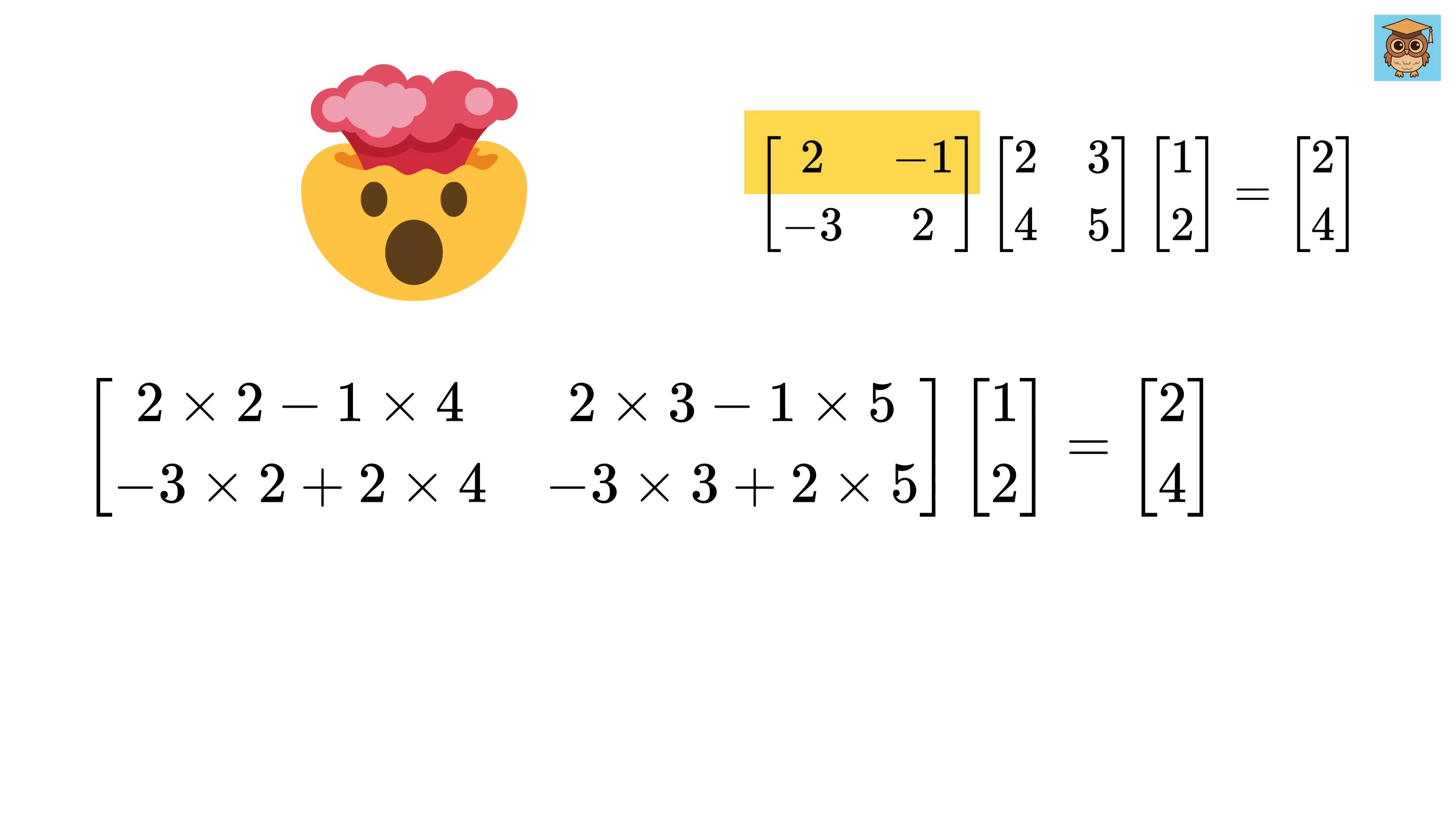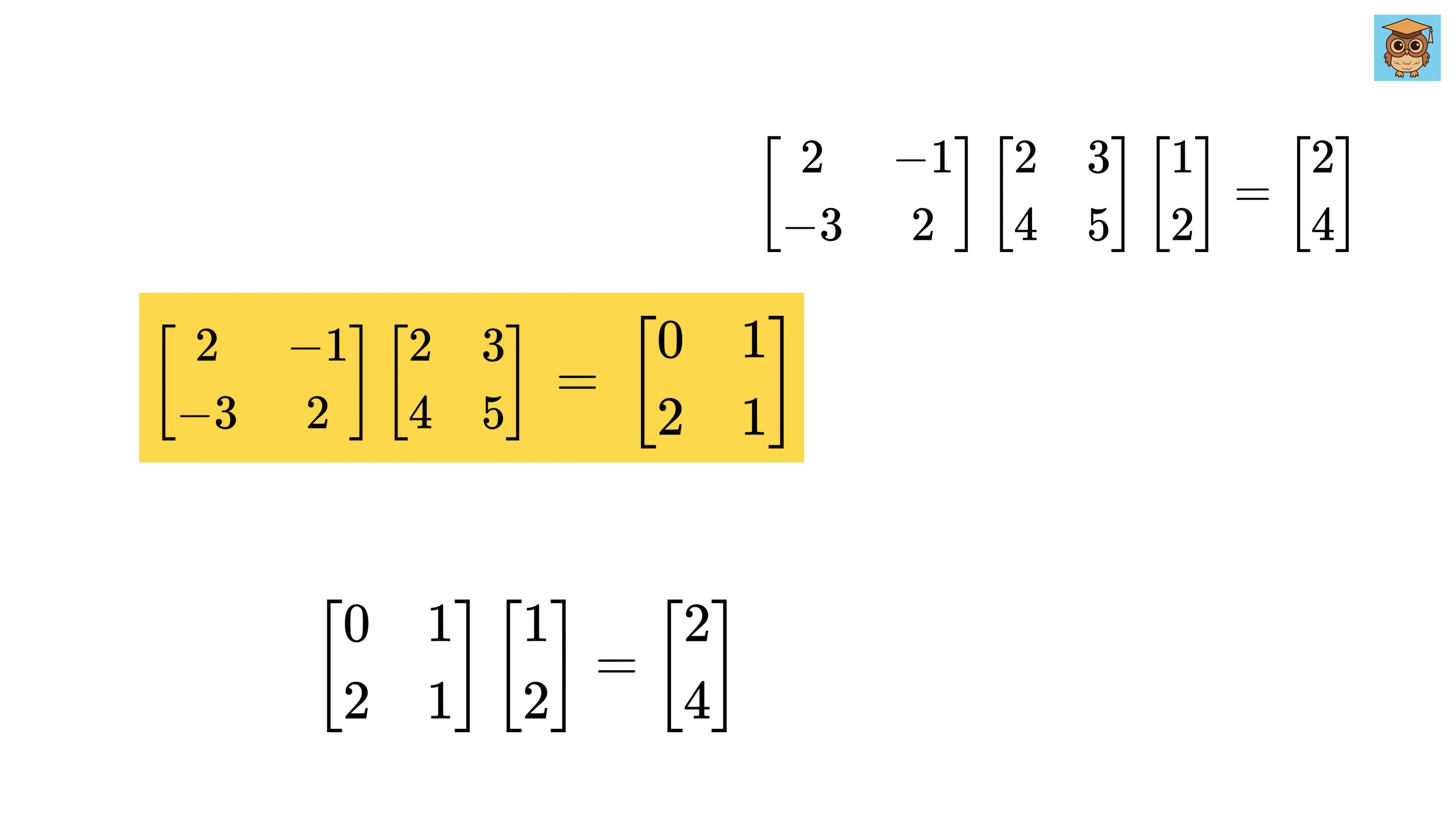We multiply this row with this column to get this value, then this row with this column to get this. Then second row with this first column to get this, and then finally this with this to get this. The final value of this new matrix will be equal to this. That's exactly what matrix multiplication does. It finds the direct transformation without needing intermediate steps.